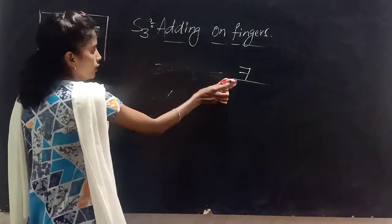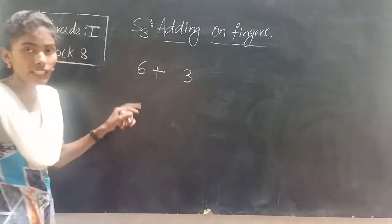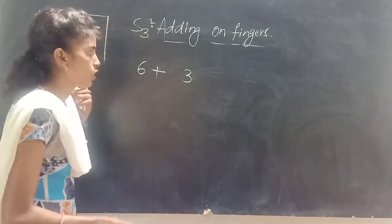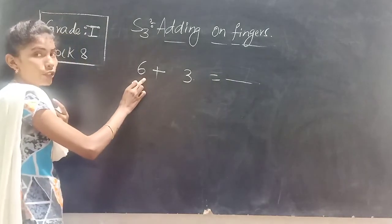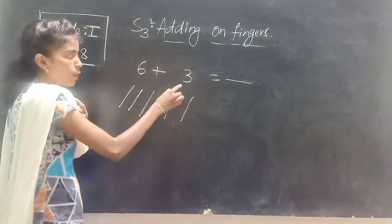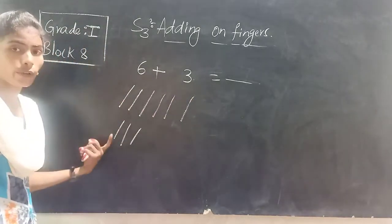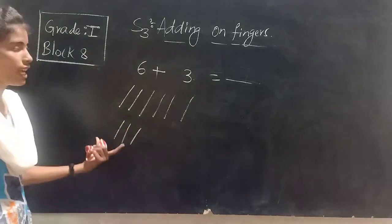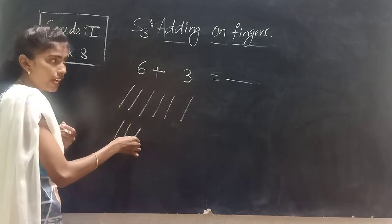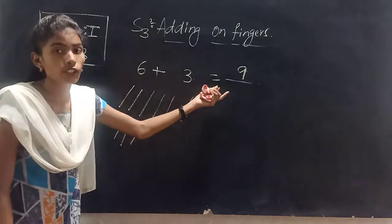Now for example: six plus three. I want to use my fingers to add the numbers. First I take six fingers — one, two, three, four, five, six. Next, three more fingers — one, two, three. Now combine all: one, two, three, four, five, six, seven, eight, nine. The answer which we get after addition is sum. So six plus three is equal to nine.